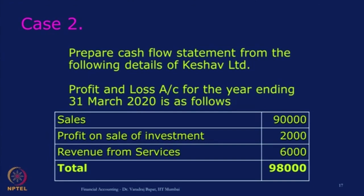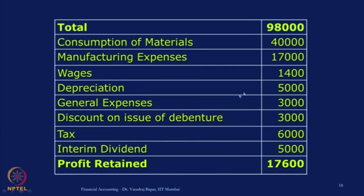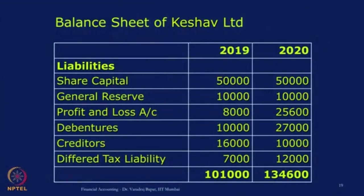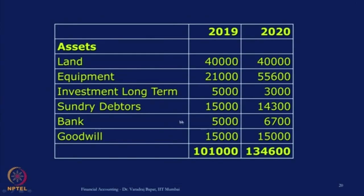Sales, profit on sale of investment, and revenue from services — total is 98,000. From this there are deductions like consumption of material, manufacturing expenses, wages, depreciation, general expenses, discount on issue of debentures, tax, and interim dividend — and we have got profit retained which is 17,600. We have also been given two years' figures of the balance sheet for March 2019 and March 2020, with certain items of liabilities and certain items of assets.